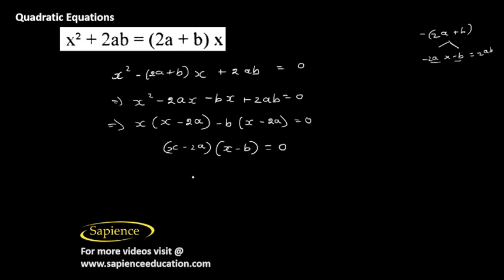x minus 2a equal to 0 means x equal to 2a. x minus b equal to 0 means x equals b. Answer to this question is 2a and b.